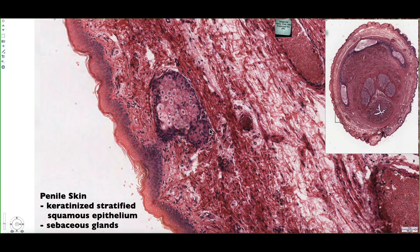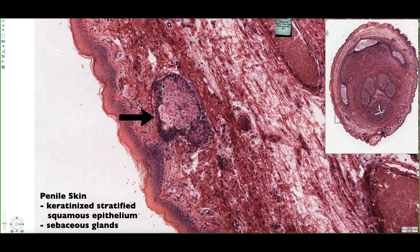Since the penis is surrounded by skin, we should expect a layer of stratified squamous epithelium, and that's exactly what we can see here lining the most external boundary of the penis. We can also see a layer of dead skin cells that is sloughing off — this is called keratin. So this epithelial lining is considered keratinized stratified squamous epithelium, and in some regions we can identify a sebaceous gland that is opening up onto the skin surface.